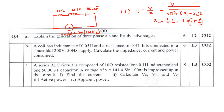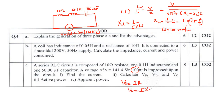XC = 1/(Cω) = 1/(C × 100). Substitute to get the current value. Then calculate: VR = I × R, VL = I × XL, and VC = I × XC.